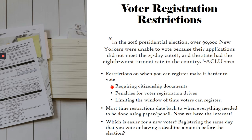Current restrictions include requirements for citizenship documents like a birth certificate — which you'd have to pay for if you don't have access to it — penalties for voter registration drives, and limiting the window of time voters can register. I'm a huge procrastinator and due dates can be really hard for me if I don't put them in my calendar. So making sure all of these restrictions are in place really limits our ability to vote.